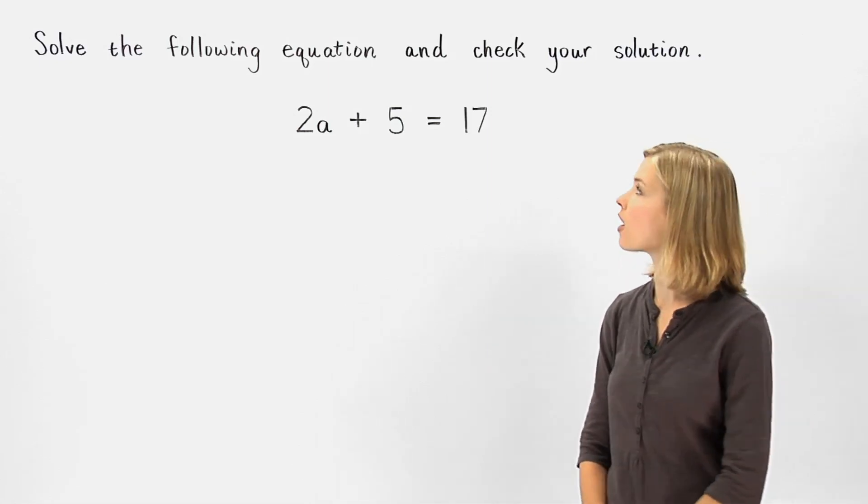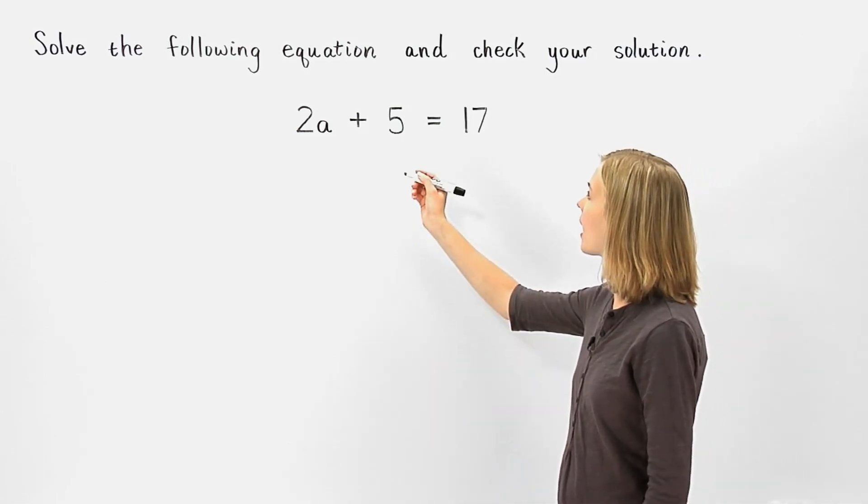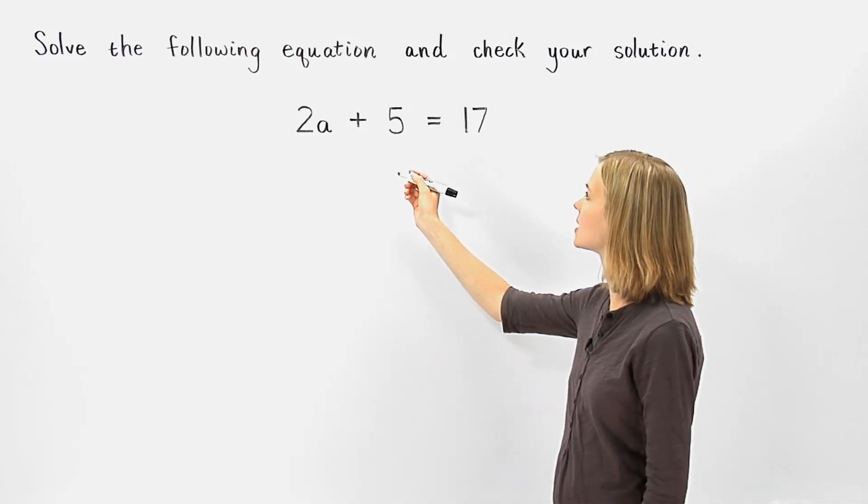In this problem, we're asked to solve the following equation and check your solution. 2a plus 5 equals 17.